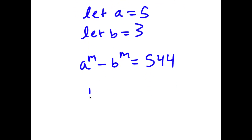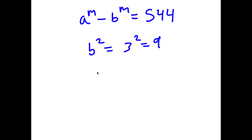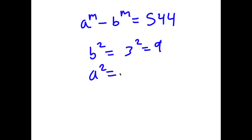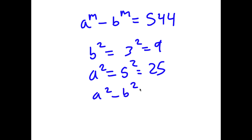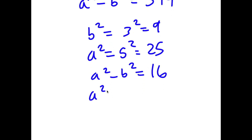Since b equals 3, b squared equals 9, and a squared, which is 5 squared, equals 25. So a squared minus b squared equals 25 minus 9, which is 16. And a squared plus b squared, which is 25 plus 9, is 34.